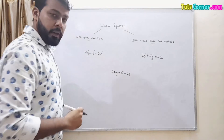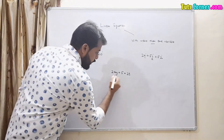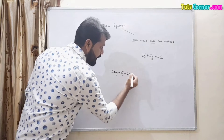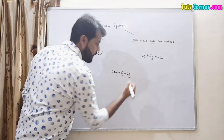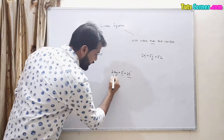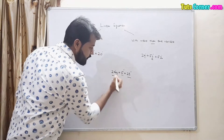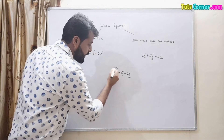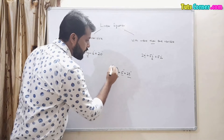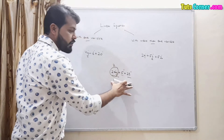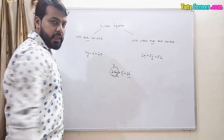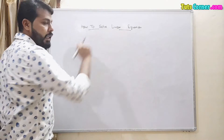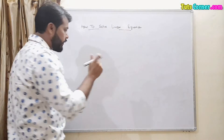Let us take one more equation. This term has degree one, this term has degree one, but this term has x with degree one and y with degree one, so this term has a total degree of two. Therefore this is not a linear equation. Now let's see how to solve linear equations.